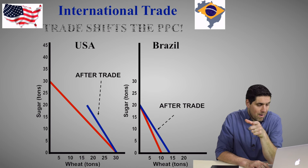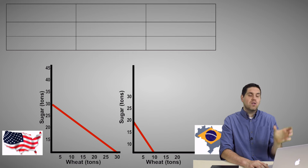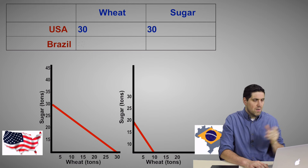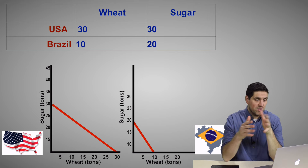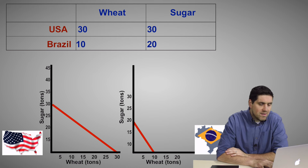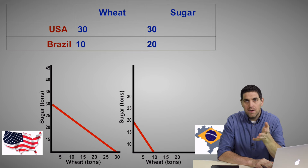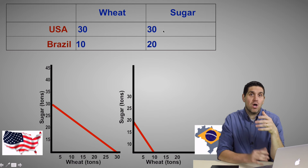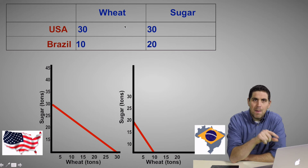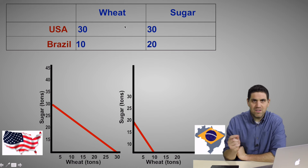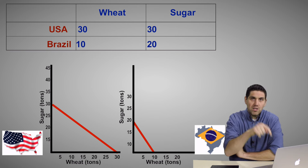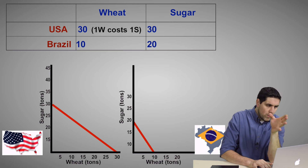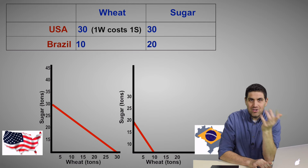Now the question is: how did I get those numbers? What you've got to do is convert the graphs into a chart — U.S. and Brazil across the top, wheat and sugar. The United States can produce 30 wheat or 30 sugar. Brazil can produce 10 wheat or 20 sugar. Absolute advantage is easy to spot: it's whichever country can produce more. For the U.S., one wheat costs one sugar in opportunity cost. For the U.S., one sugar costs one wheat. For Brazil, one wheat costs two sugars. And on the other side, each sugar costs one half of a wheat — because if they produce 20 sugar, they could have produced 10 wheat, so each sugar costs one half a wheat.